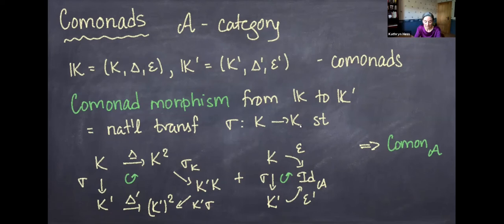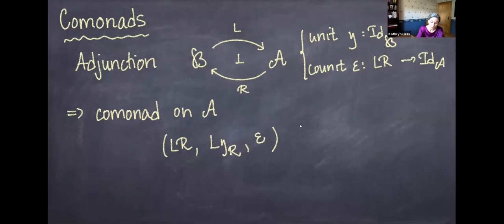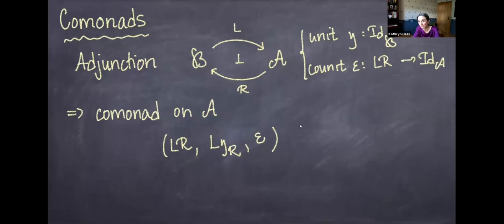You can talk about morphisms between comonads. A comonad morphism from K to K' is a natural transformation between the underlying endofunctors satisfying two conditions: compatibility with the co-unit and compatibility between the two co-multiplications. This gives us a category of comonads on A. A great source of comonads comes from adjunctions: if we have an adjunction with left adjoint L, right adjoint R, unit and co-unit, this gives rise to a comonad on A where the endofunctor is LR.